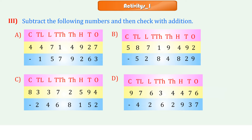Activity 1, Problem 3 — Part A: Crores 4, Ten Lakhs 1, Lakhs 7, Ten Thousands 5, Thousands 1 and 7, Hundreds 4 and 9, Tens 9 and 2, Ones 2 and 6, answer digits 7 and 3. Part B: Crores 5, Ten Lakhs 8 and 5, Lakhs 7 and 2, Ten Thousands 1 and 8, Thousands 9 and 4, Hundreds 4 and 8, Tens 9 and 2, Ones 2 and 9.